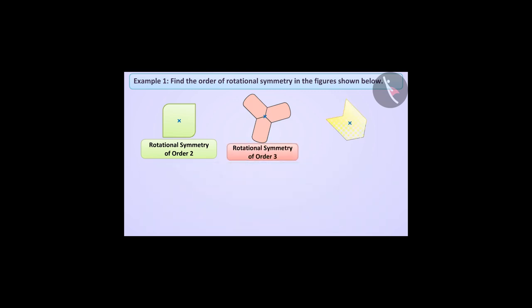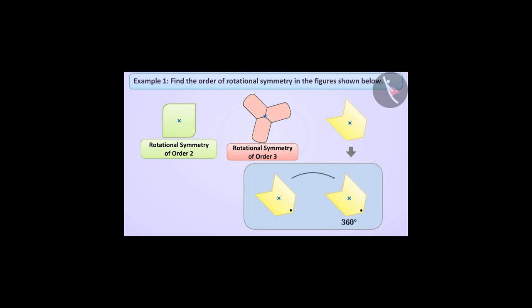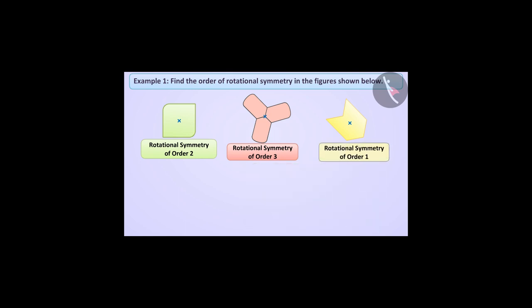Now let's talk about the third figure. If this figure rotates around the center of rotation shown, then only at a rotation of 360 degrees does the figure look exactly in the same state as before. That is, the third figure has a rotational symmetry of order 1.